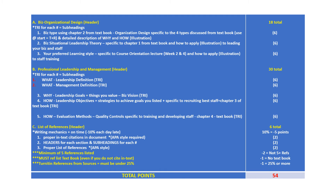Number one, you can label a subheading as 'business type.' Here I'm giving you direct information of where to find the terminology — use chapter two from the textbook. There are four types there; you want to start to describe and cite from the textbook the type of business you are going to build. Number two, chapter one talks about business situational leadership theory. Pick which one you want to use from that, and cite it for how you're going to incorporate leading your business and your staff.